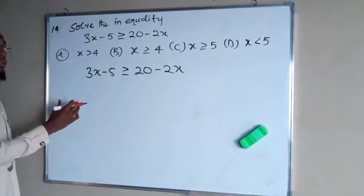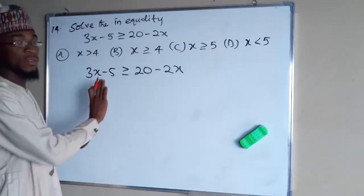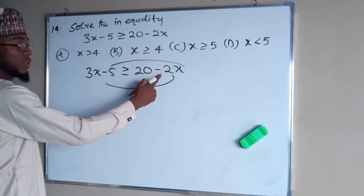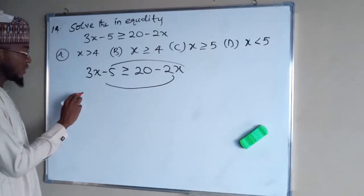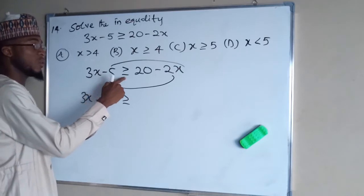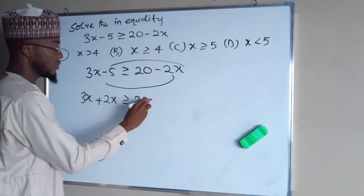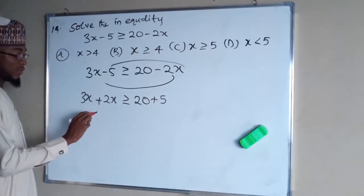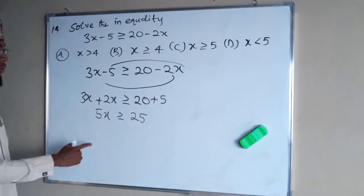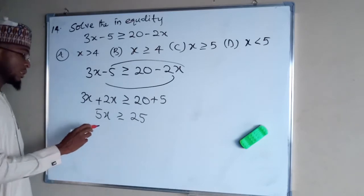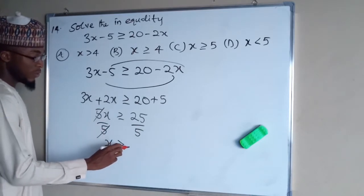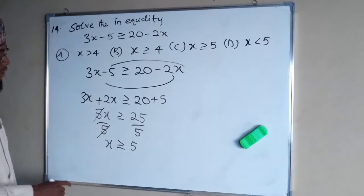We bring all terms with their coefficients to the left-hand side and take constant terms to the right-hand side. The minus 2x becomes positive when moved left, giving 3x plus 2x. The minus 5 becomes positive 5 on the right side, giving 20 plus 5. So 5x ≥ 25. Dividing both sides by 5, x ≥ 5, since 25 divided by 5 is 5. This is the right answer, option C.